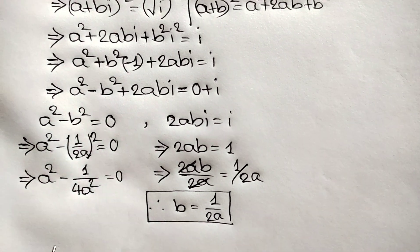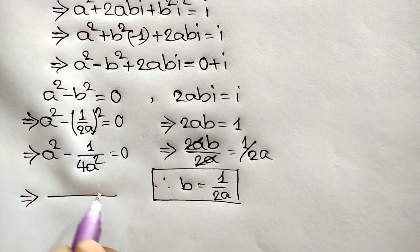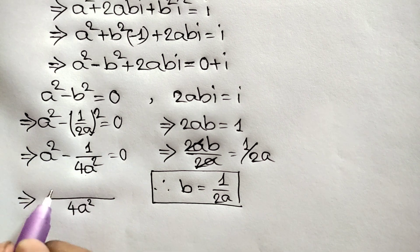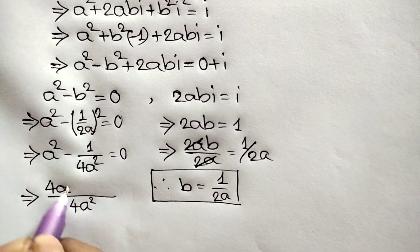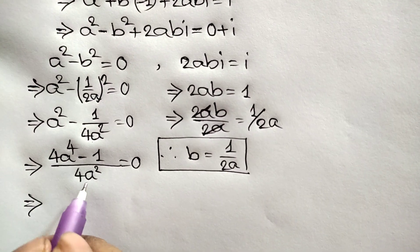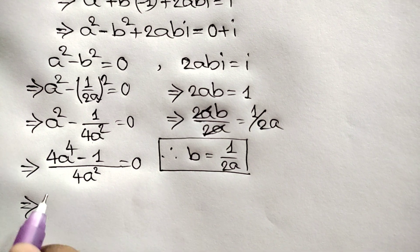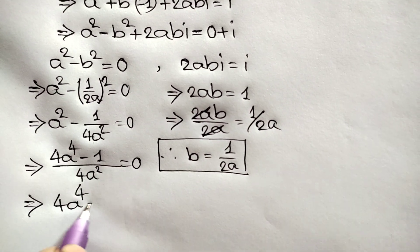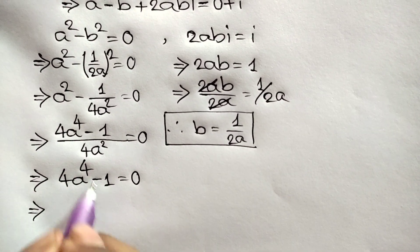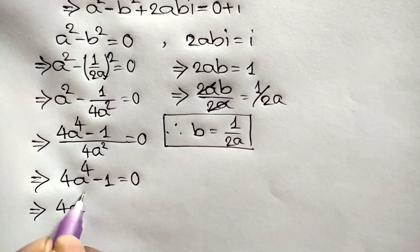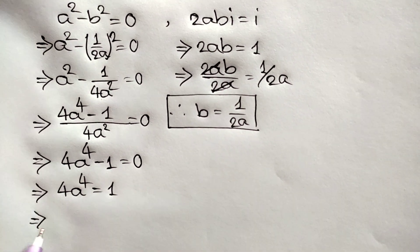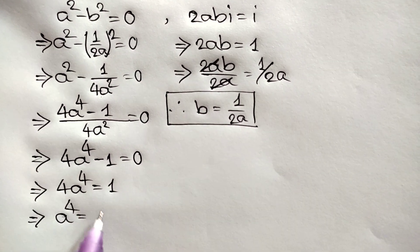Multiplying through by four a squared as the LCM, we get four a to the power four minus one equals zero. By cross multiplication, four a to the power four equals one.